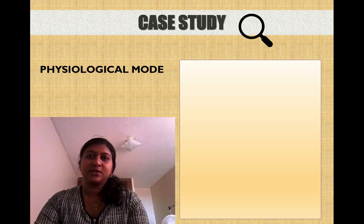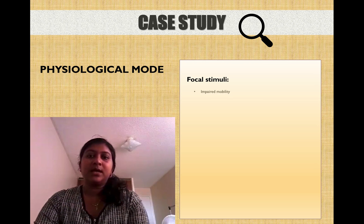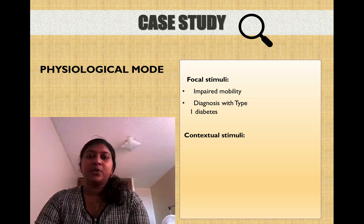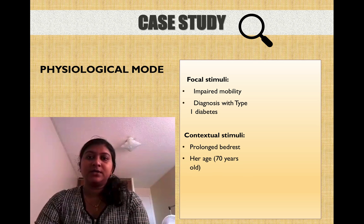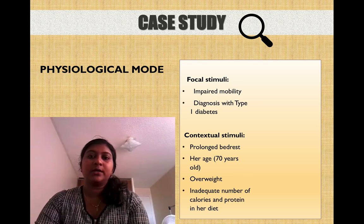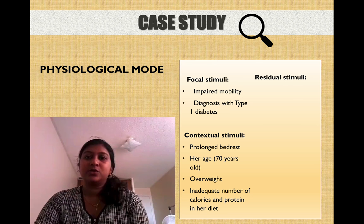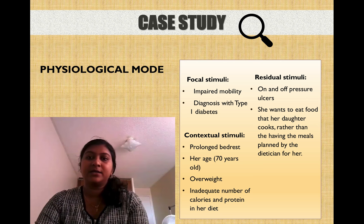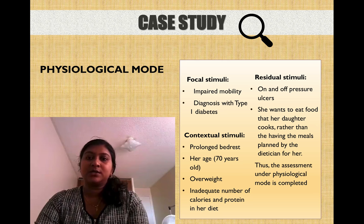For assessment of stimuli under the physiological mode: focal stimuli include impaired mobility and diagnosis with type 2 diabetes. Contextual stimuli include prolonged bed rest, age of 70 years, being overweight, and inadequate calories and protein in her diet. Residual stimuli include on-and-off pressure ulcer and her preference to eat food cooked by her daughter rather than the meals planned by the dietician. Thus the assessment under the physiological mode is completed.